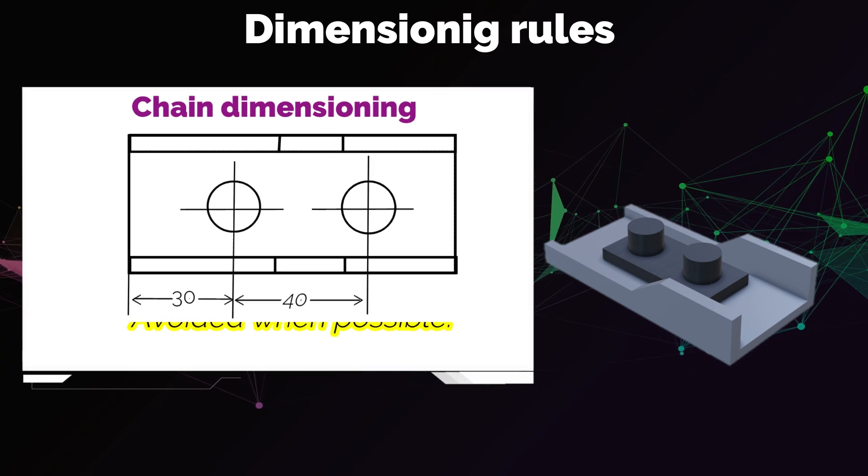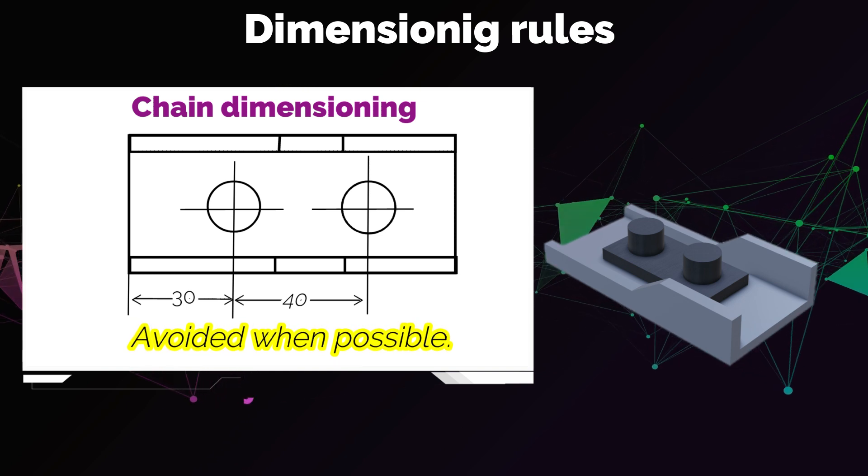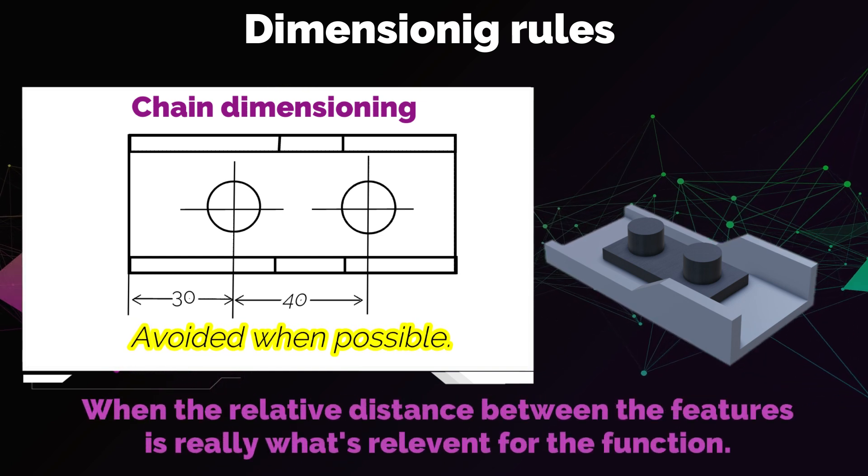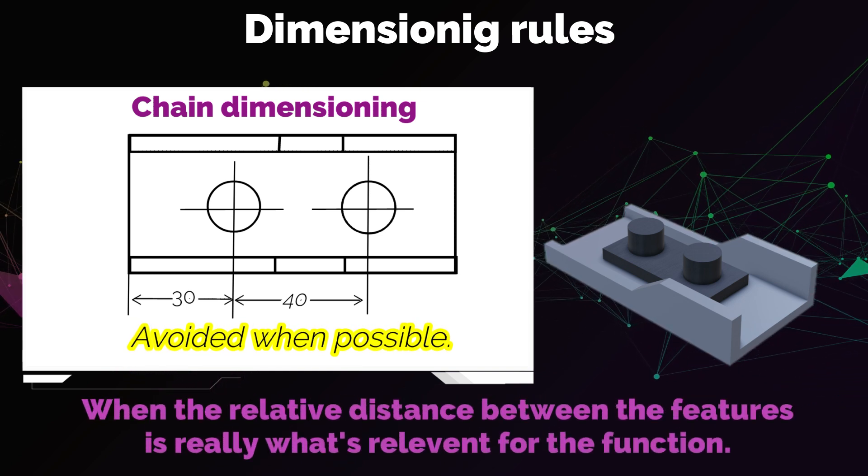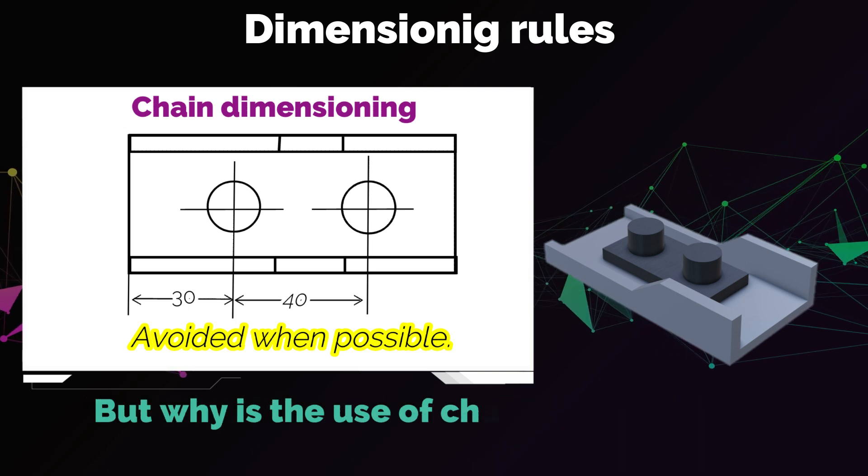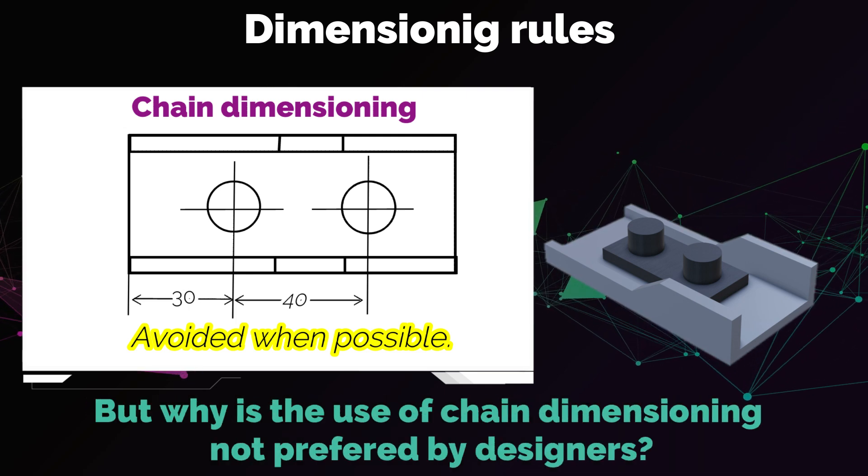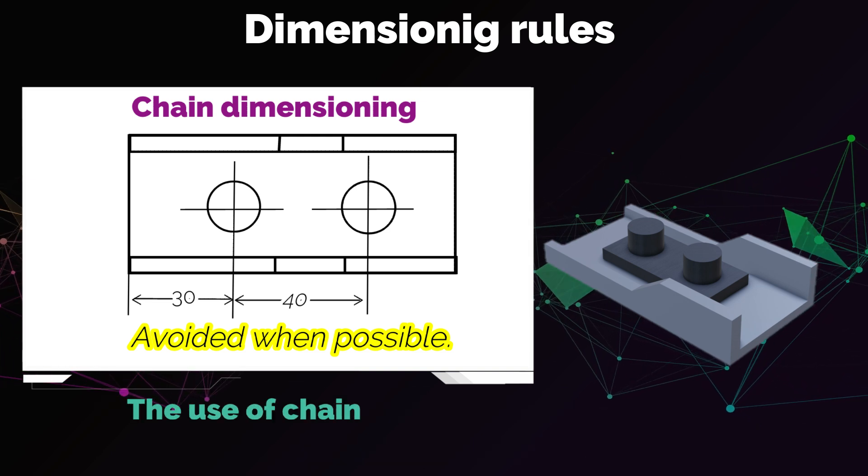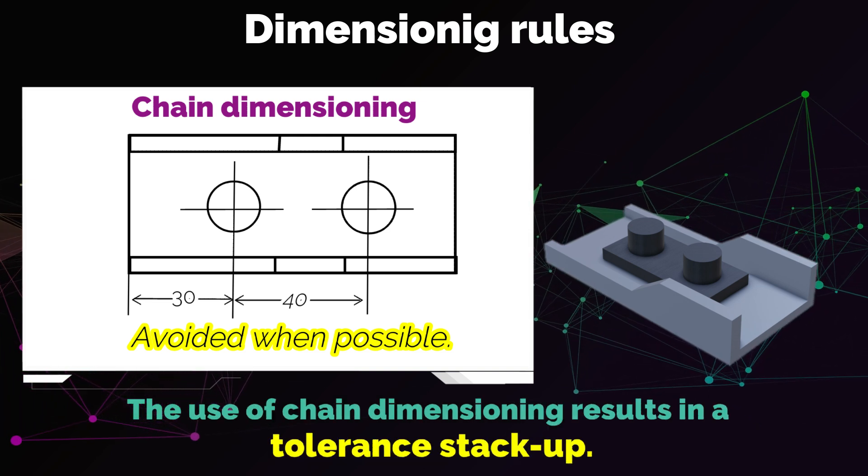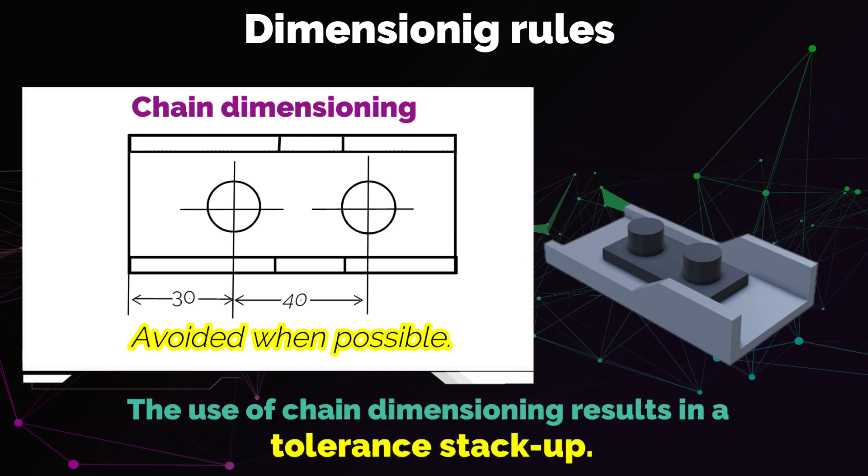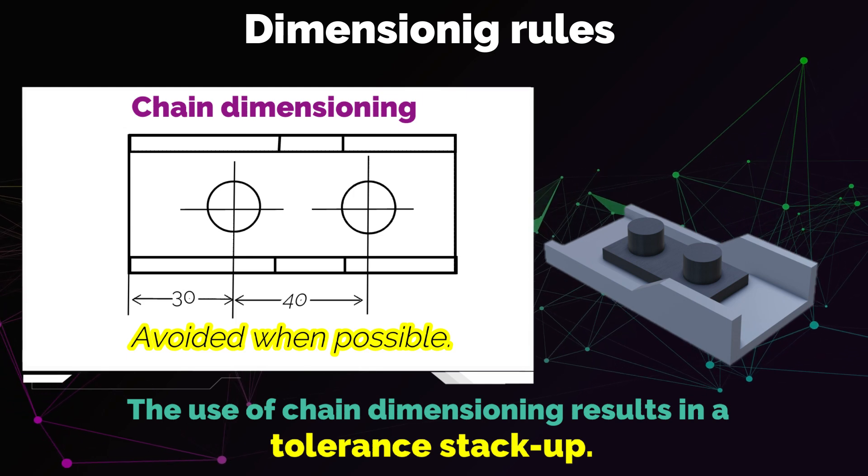This method should be avoided when possible. It should only be used when the relative distance between the features is really what's relevant for the function. But why is the use of chain dimensioning not really preferred by many designers? That is because using chain dimensioning results in a tolerance stack-up, as the position of the last hole is affected by the position of the one before it, and so on.